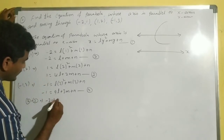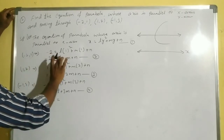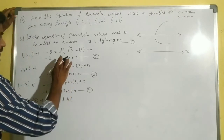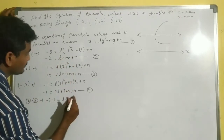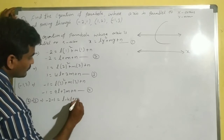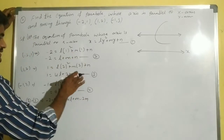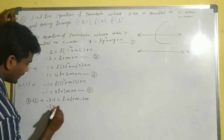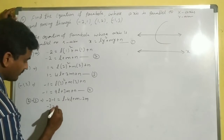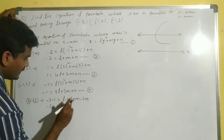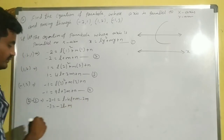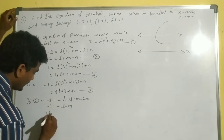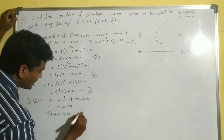Doing equation 2 minus equation 3: (-2) - 1 = -3. On the right side: (l - 4l) + (m - 2m) + (n - n) = -3l - m. So -3 = -3l - m, which rearranges to 3l + m - 3 = 0. This is equation number 5.